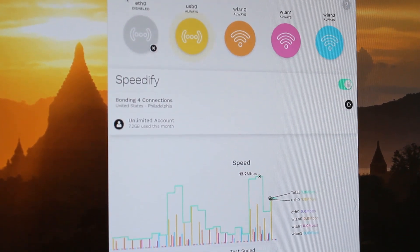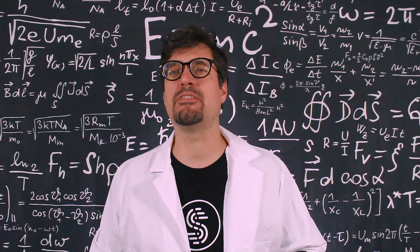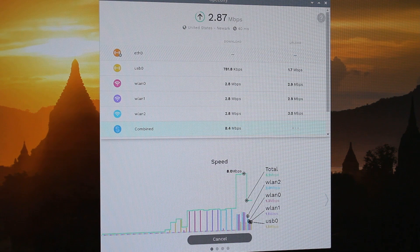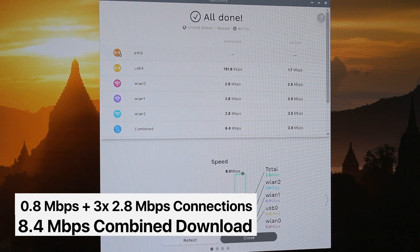These connections were all too weak individually to provide even three megabits per second of download speeds. But after combining them together, we managed to bring speeds up to 8.4 megabits per second.